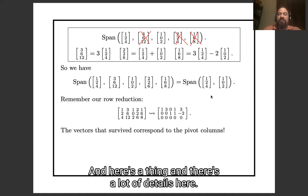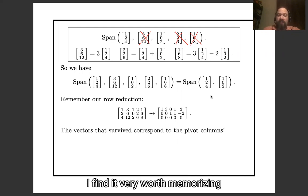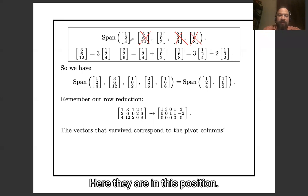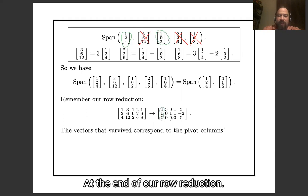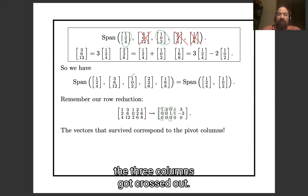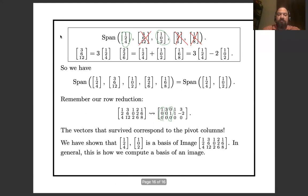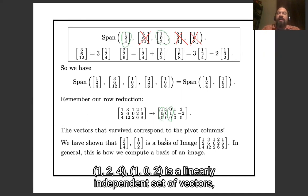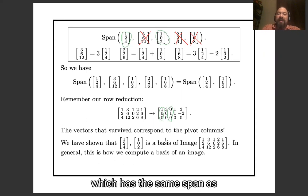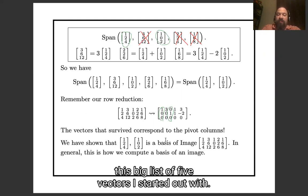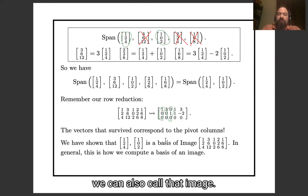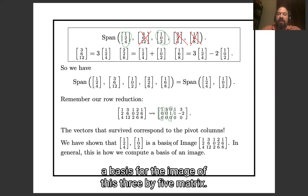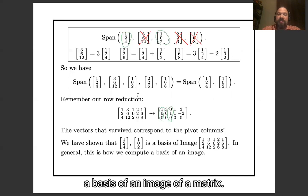Here's something worth memorizing: the vectors which survived the process — the first and third vectors — were in positions corresponding to the pivot columns at the end of our row reduction. The vectors in positions corresponding to the free columns got crossed out. So we have shown that {(1,2,4), (1,0,2)} is a linearly independent set of vectors with the same span as the original list of five vectors. Since span can also be called image, we have shown these two vectors are a basis for the image of this 3×5 matrix. In general, that is how you compute a basis of the image of a matrix.